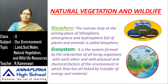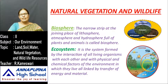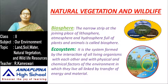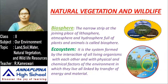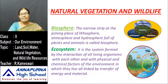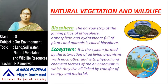For natural vegetation and wildlife, I first want to explain two keywords. Listen carefully. The first is biosphere — I already explained this in seventh class. Biosphere means the narrow strip at the joining place of lithosphere, atmosphere, and hydrosphere, full of plants and animals. You can see in this picture: atmosphere, hydrosphere, and lithosphere — the mixture at their junction is called the biosphere. Human beings exist in this biosphere.